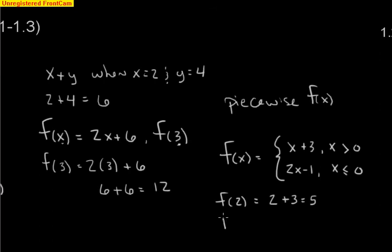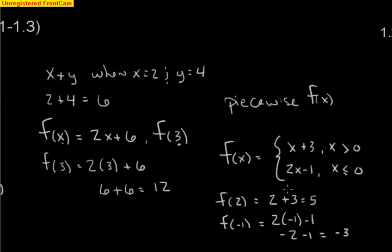Another example: F of negative 1. Is negative 1 bigger than 0? No. Is negative 1 less than or equal to 0? Yes, it is. So we plug it into the bottom rule: 2 times negative 1 minus 1 gives negative 2 minus 1, which is negative 3 for our answer. So that's a quick review and bonus preview from section 1.1 on evaluating expressions.